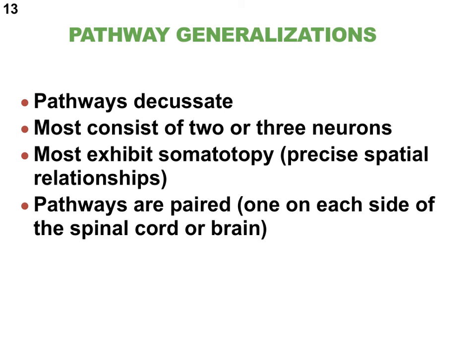Some generalizations about neural pathways: most of them will cross over (decussate), though not all. If pathways are ipsilateral — staying on the same side — they typically decussate twice. Many pathways consist of at least two or three neurons in a row. Somatotopy is very well preserved in both brain and spinal cord. Pathways are always paired, largely because both the brain and spinal cord are bilaterally symmetrical.